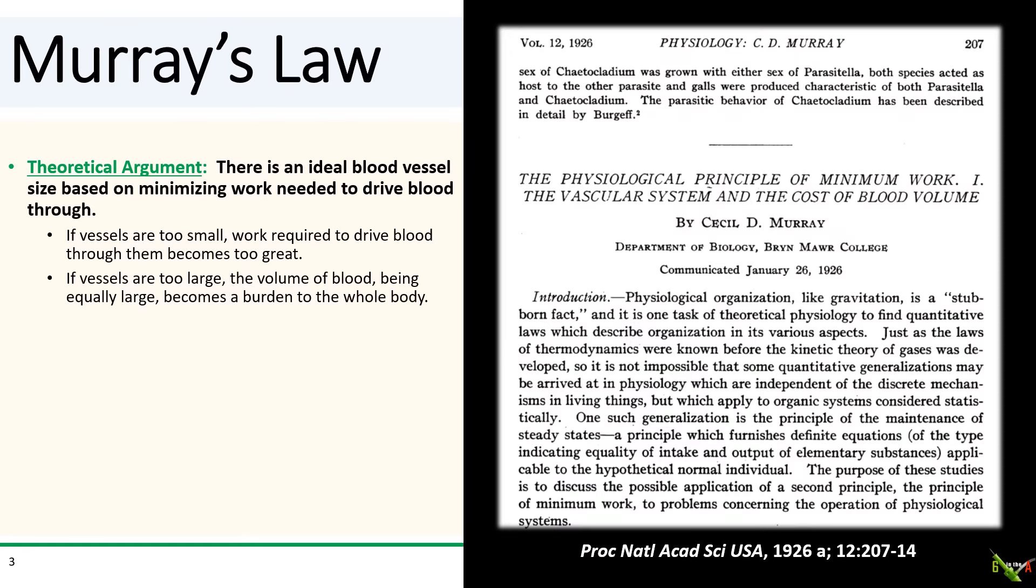Back in 1926, Cecil Murray was the first to establish a relationship between blood vessel diameters at a bifurcation. He based it on a purely theoretical argument. He argued that the ideal size of the blood vessel is one that minimizes the amount of energy that is needed to drive blood through it. If a blood vessel is too small, then it will take too much energy to drive blood through it. If a blood vessel is too large, then the volume of blood needed to fill it will be too large as well.